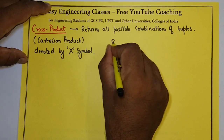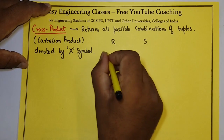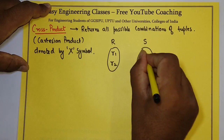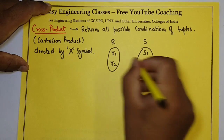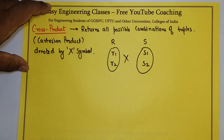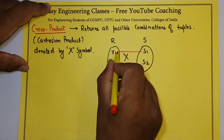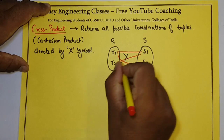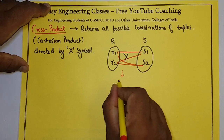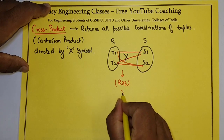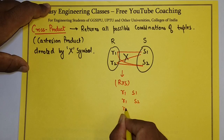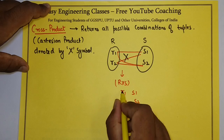Suppose I have a relation R and another relation S. R has values R1, R2 and S has values S1, S2. The Cross Product of R and S will result in the combination of R1 with S1 and R1 with S2. Similarly, combination of R2 with S1 and R2 with S2. So the result R cross S will be: (R1, S1), (R1, S2), (R2, S1), and (R2, S2).